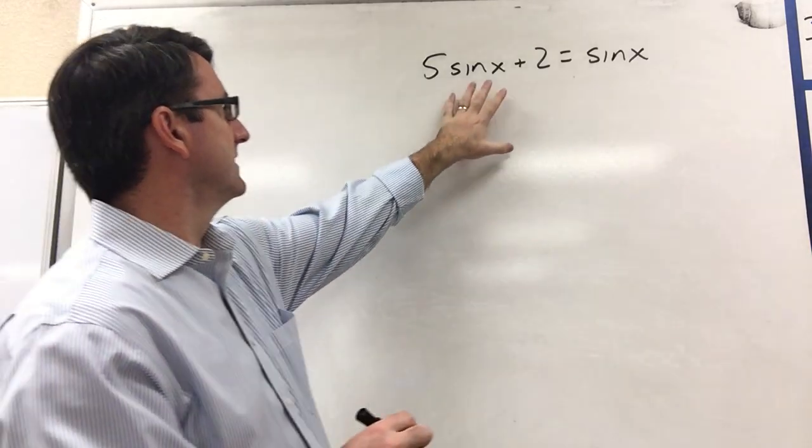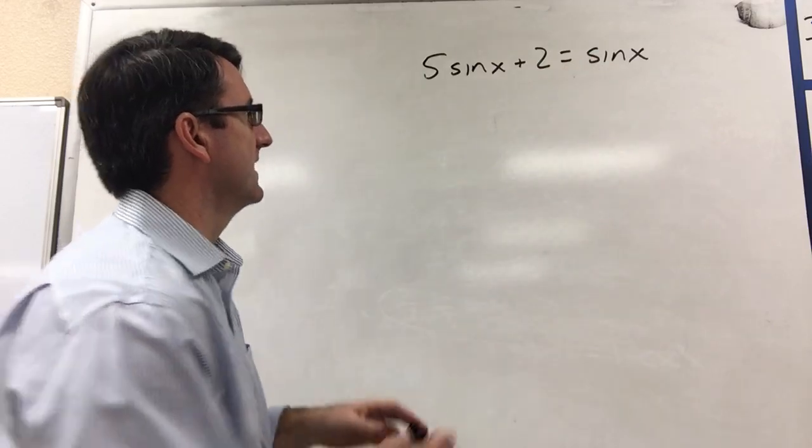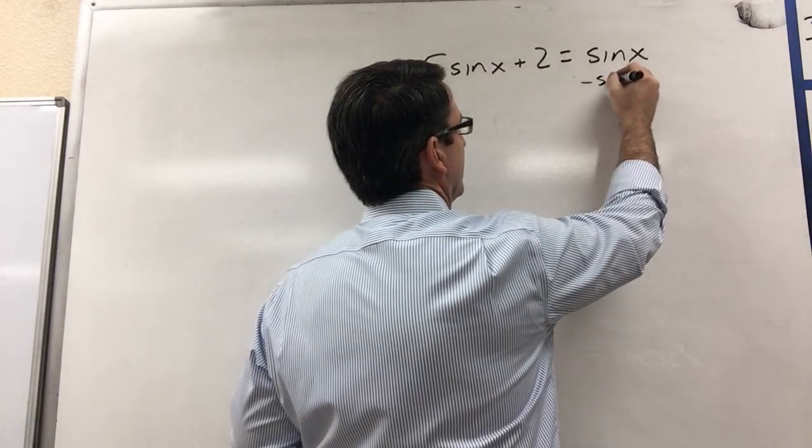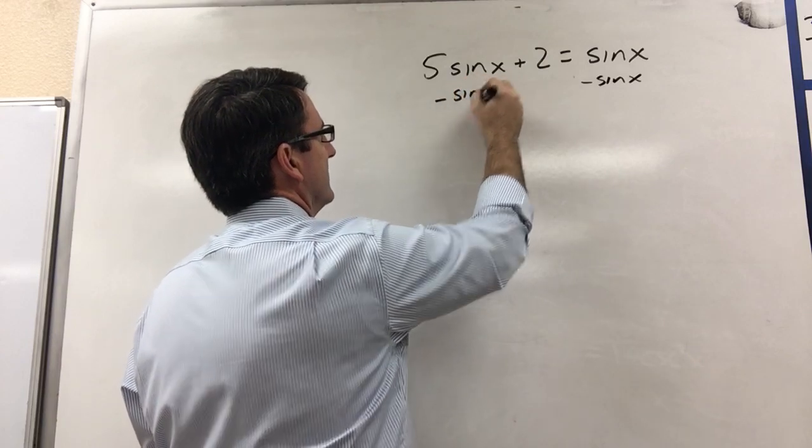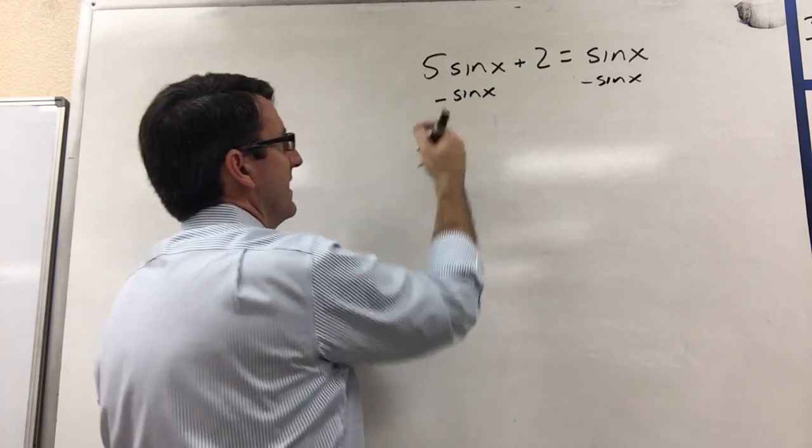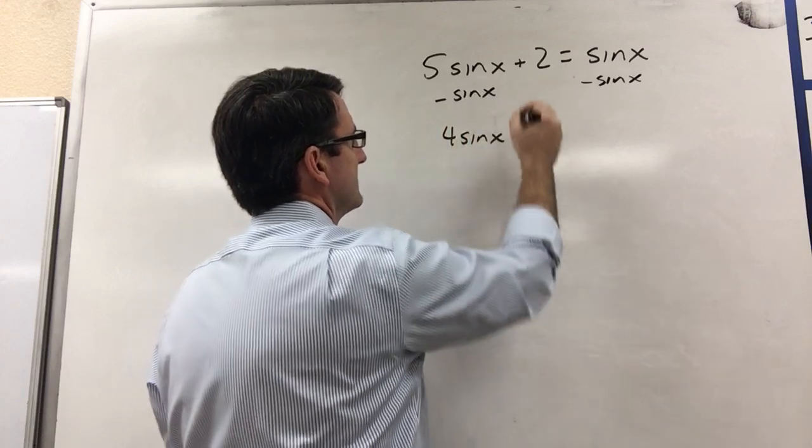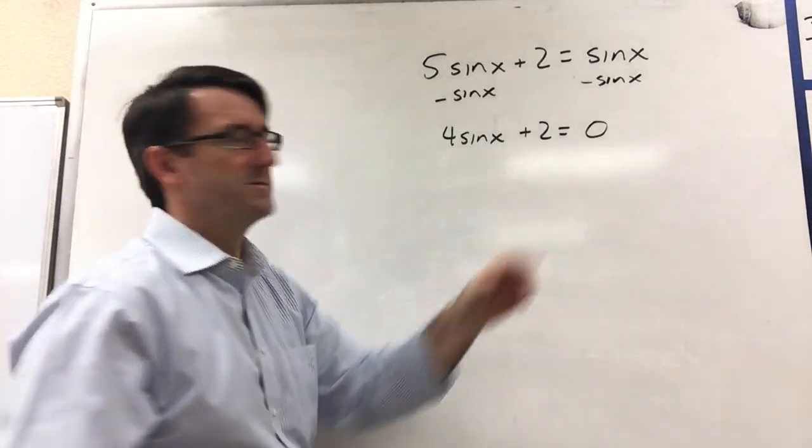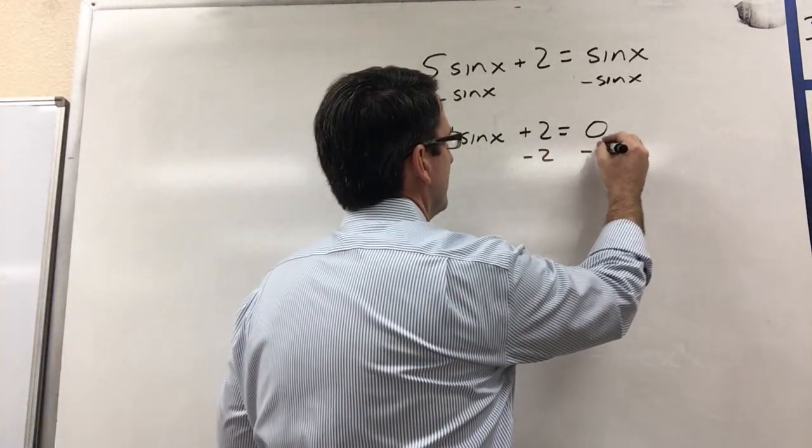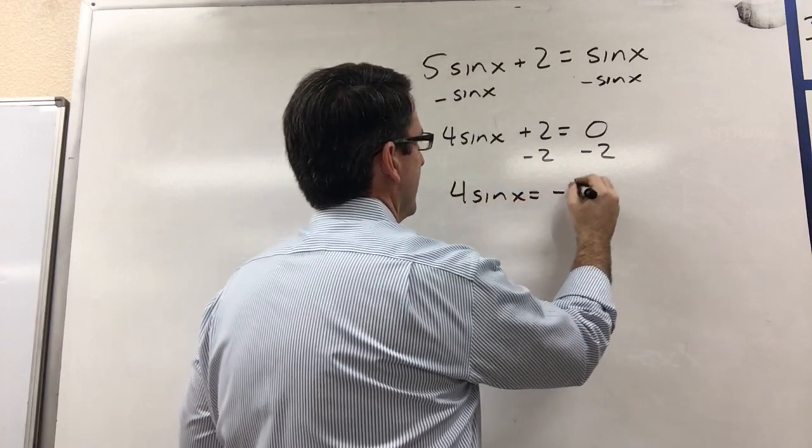So let's get all the sines on one side and the constants on the other side. So we'll subtract sine x from both sides. So 5 sine x minus 1 sine x is going to be 4 sine x plus 2 is equal to 0. Now let's subtract that 2 from both sides. So we get 4 sine x is equal to negative 2.